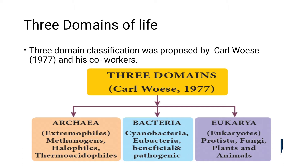Methanogens are bacteria that need methane to live, just like how we need oxygen. Halophils are bacteria that live in extreme salt conditions.